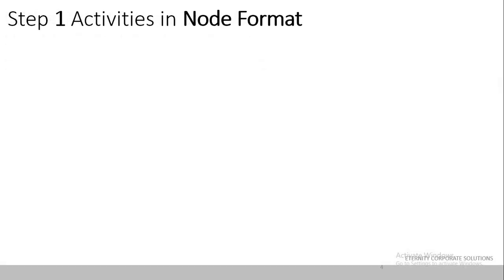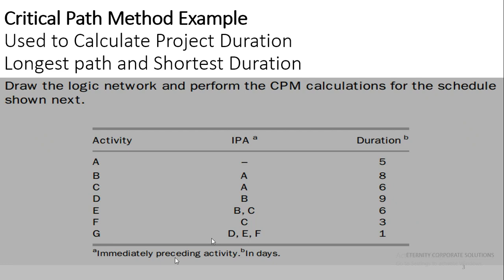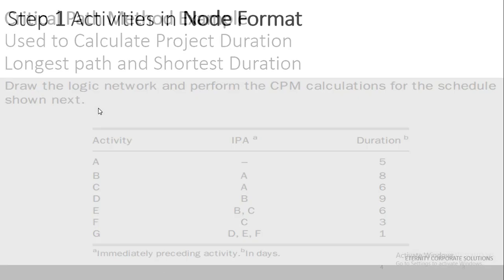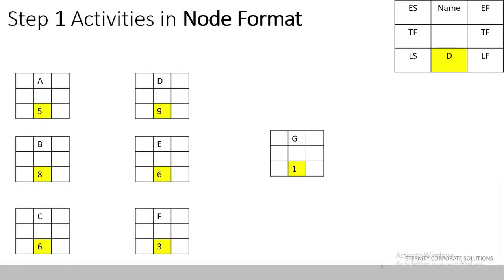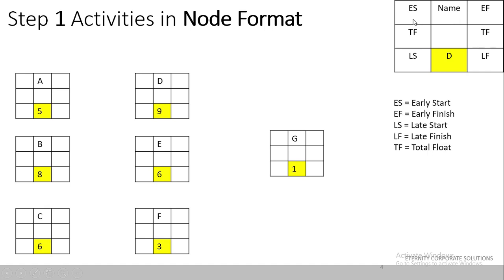In Step 1 we will convert these activities into the node format. On the right corner you can see the legend which shows the different components of the activity node. In the middle we have the activity name. On the left-hand side we have the early start, then early finish, then late start, late finish, and in the middle we have the total float.